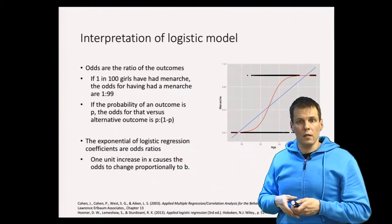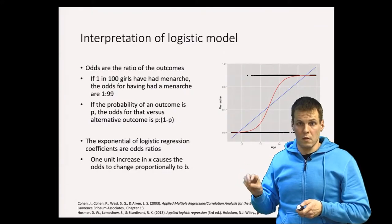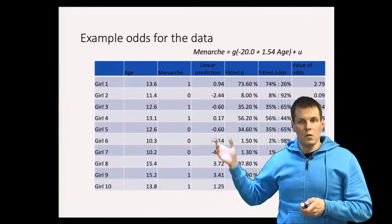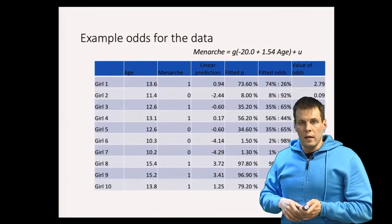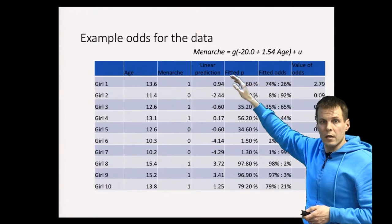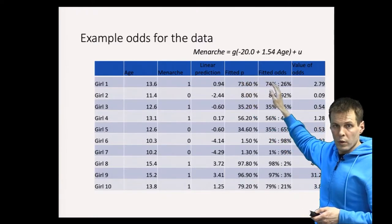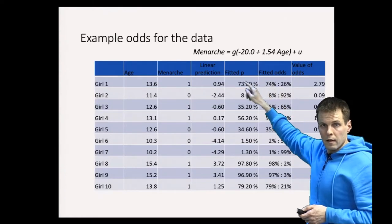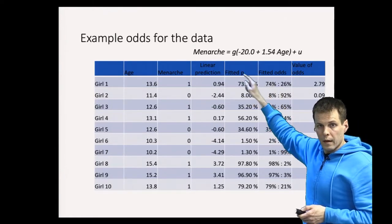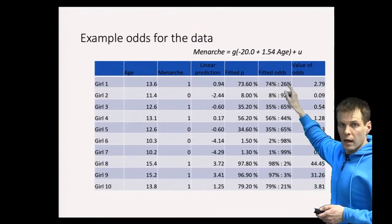Let's take a look at the idea of odds ratio and why we can interpret these coefficients as odds ratios. So example odds for the data, and this is some subset of the results. We have the linear prediction, we have the fitted probability, and we have fitted odds, which is the probability against the other probability, and we calculate the value.